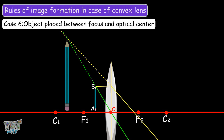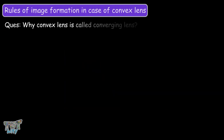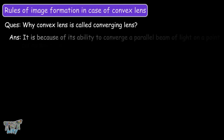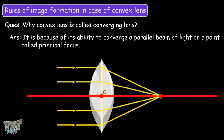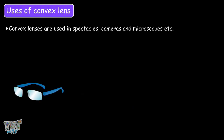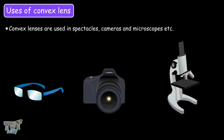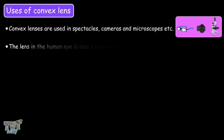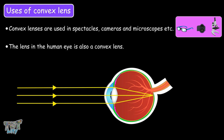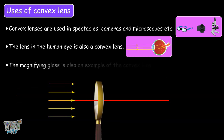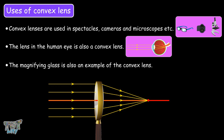Can you answer a simple question? Why is a convex lens called a converging lens? It is because of its ability to converge a parallel beam of light on a point called the principal focus. Now let's discuss the uses of a convex lens. Convex lenses are used in spectacles, cameras, and microscopes. The lens in the human eye is also a convex lens, and a magnifying glass is another example of a convex lens.